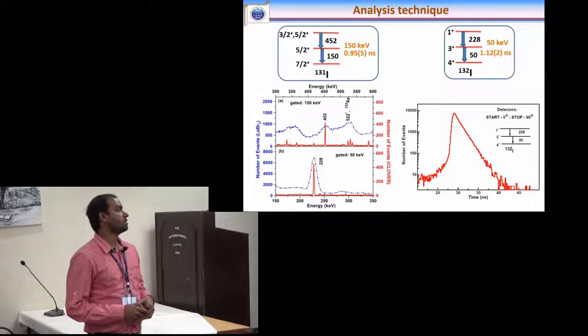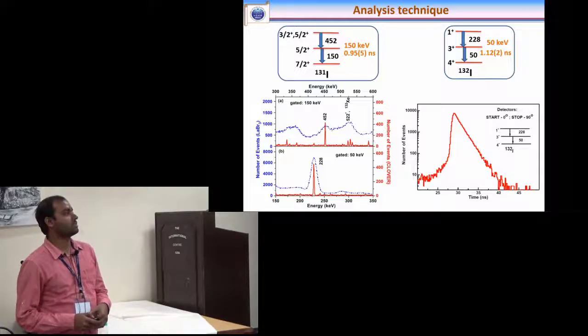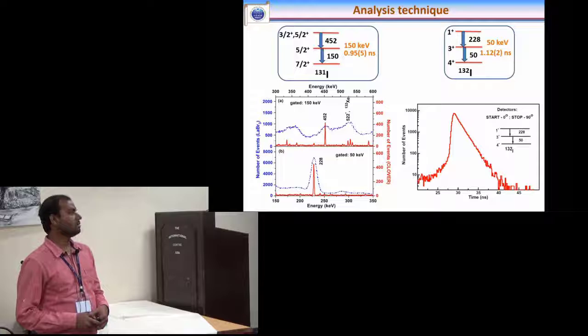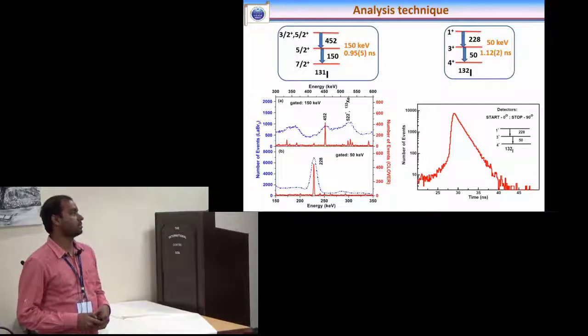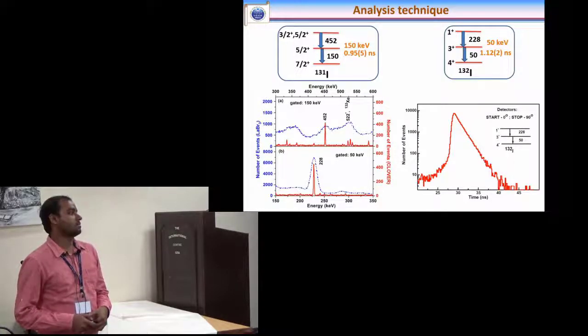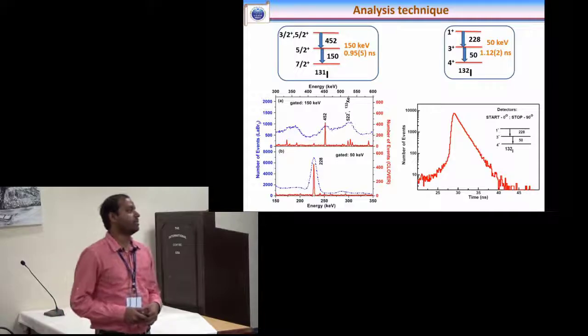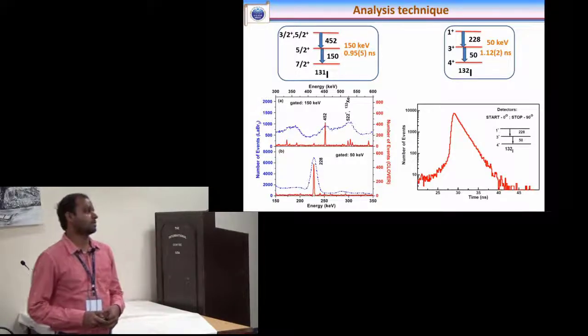We have measured quadrupole moment for 5 plus state and 3 plus state for these two isotopes. This is the gated spectrum of these two cascades and the typical time distribution spectrum for this cascade.